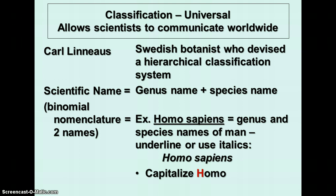You have a very large group that's divided into smaller groups, and each of the smaller groups is divided into even smaller groups all the way down. What you end up with is that each individual species has a scientific name composed of two names: a genus name and a species name. This system is called binomial nomenclature, a long Latinized word that means a two-name naming system.